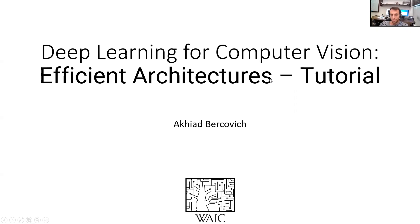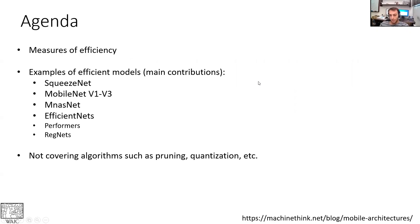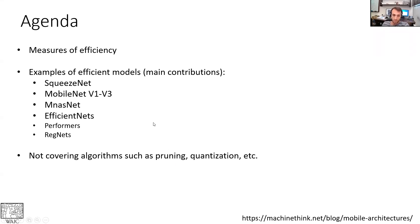Hi everybody and welcome. Today's tutorial will be about efficient architectures for deep learning. Specifically, we'll start with an overview of measures of efficiency and then dive into our atlas of efficient models, starting from early models like SqueezeNet and going through MobileNets, MNASNet, EfficientNets, Performers, and RegNets. We are focusing on architectures and not covering algorithms that improve efficiency such as pruning and quantization.